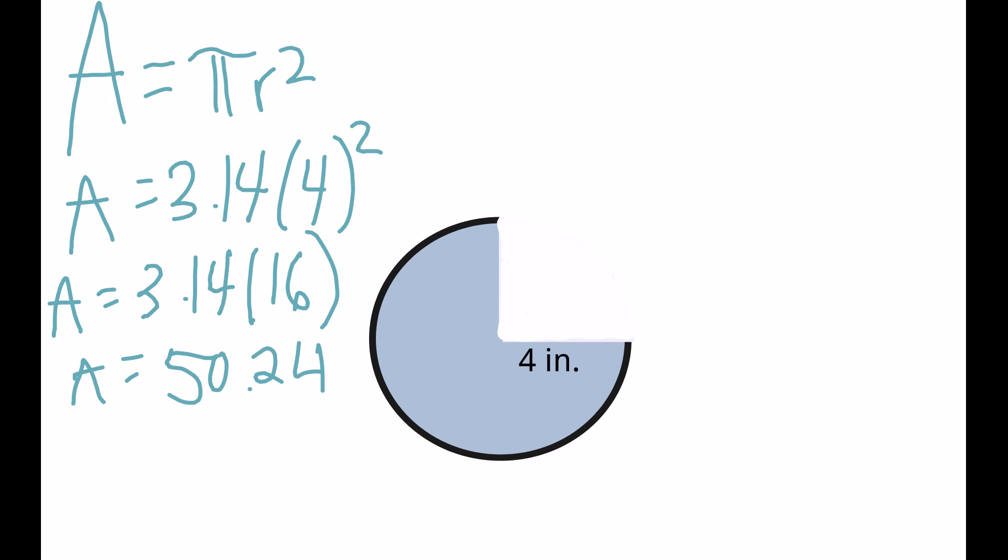But in this case, we have three-fourths of a circle. You can see that one quarter of the circle is taken out. There's a couple ways you can do this. You could divide 50.24 by 4 and then multiply by 3, or we can do that in one step. We can multiply 50.24 times three-fourths to get the completed answer. So let's go ahead and do that. We have A equals three-fourths times 50.24.